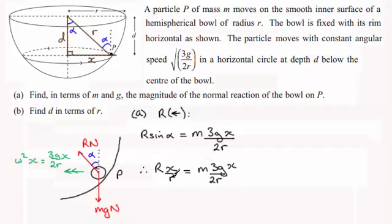I can multiply both sides by r. That will cancel those out. And I can divide through by x. So those x's cancel. Rearranging this for r gives me r equals 3 over 2 mg. There's the normal reaction expressed in terms of m and g.